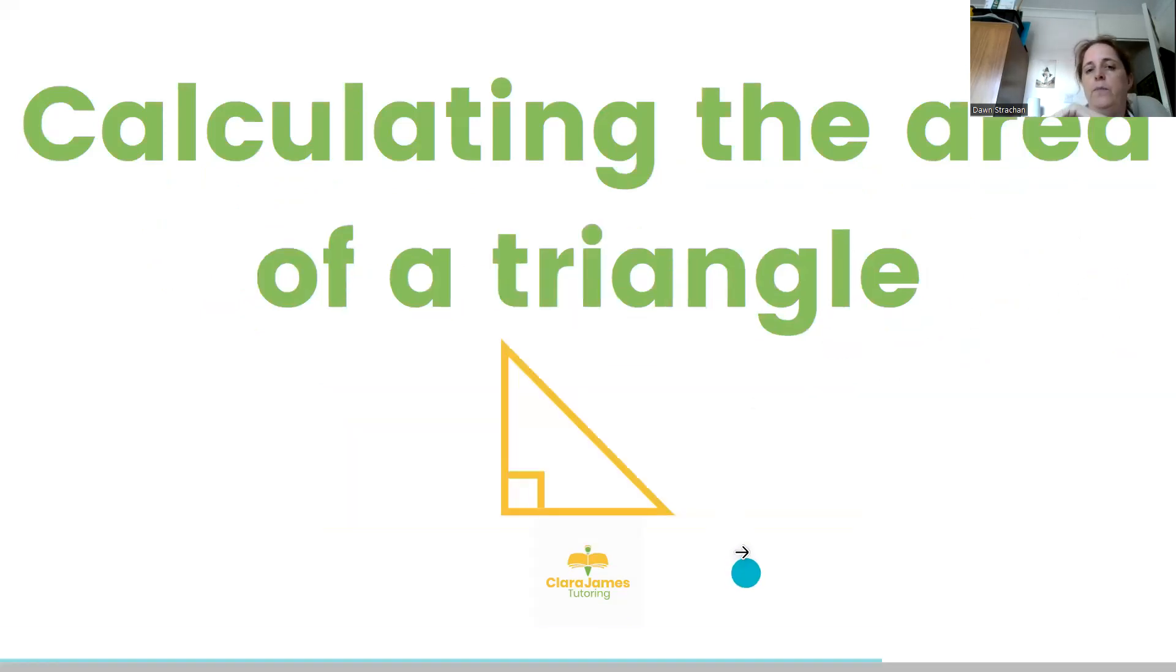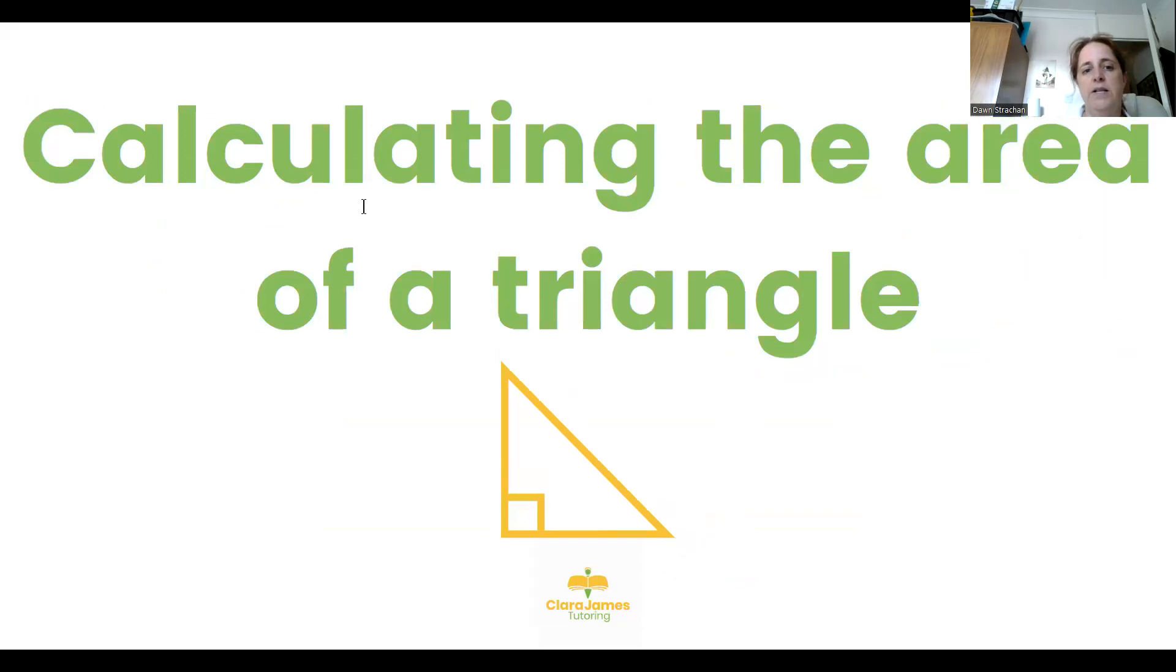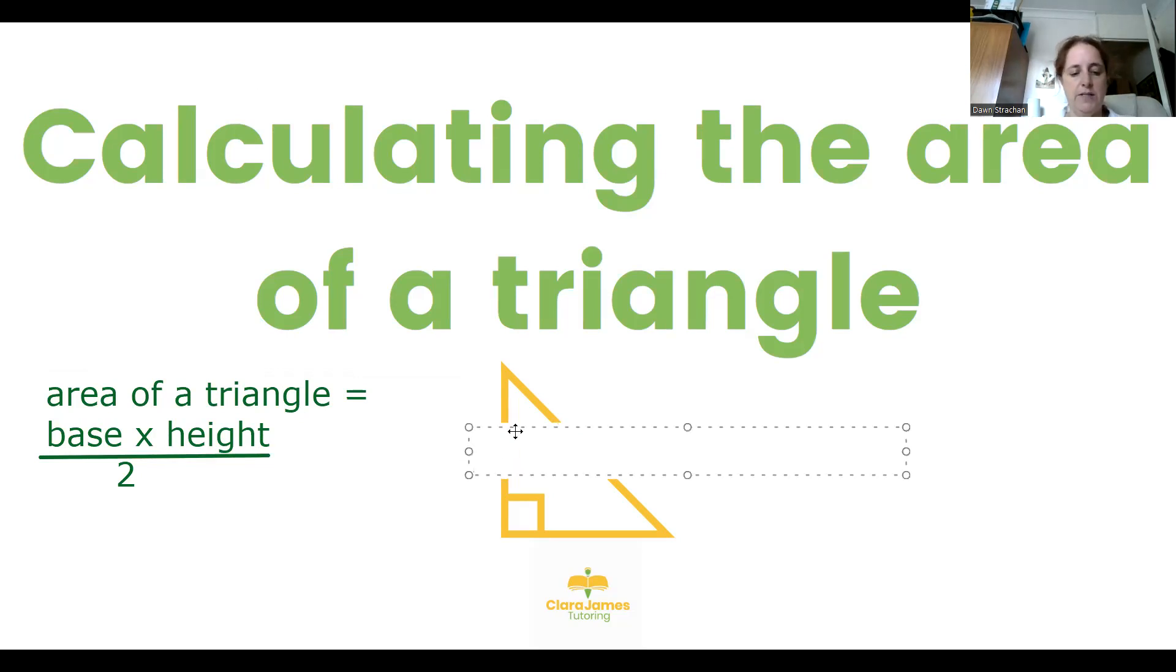Next I'm going to move on to a triangle because this is literally the same as the rectangle except we have to half our answer. So this time the area of a triangle equals base times height and that's all divided by 2. So if our height is 5 centimeters and our base is 4 centimeters, we work out 5 times 4, which is the base times height, equals 20. And then 20 divided by 2 equals 10. So the area of our triangle equals 10 centimeters squared.